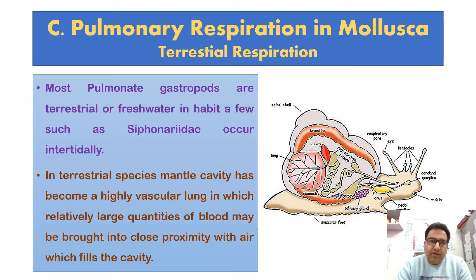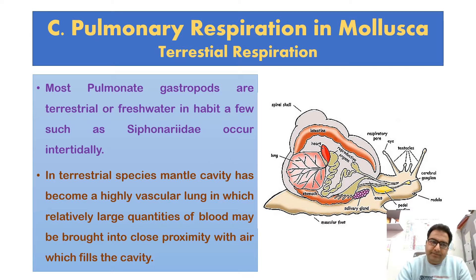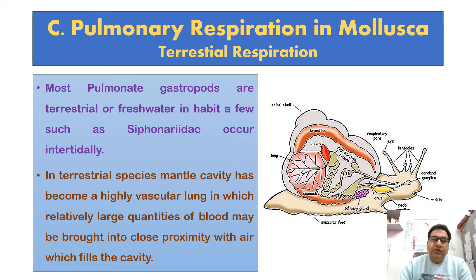Today we shall be talking about pulmonary respiration in Mollusca. Most pulmonary gastropods are terrestrial or freshwater inhabitants, but a few such as Siphonaria occur intertidally. In terrestrial species, the mantle cavity has become a highly vascular lung in which relatively large quantities of blood may be brought into close proximity with air which fills the cavity.